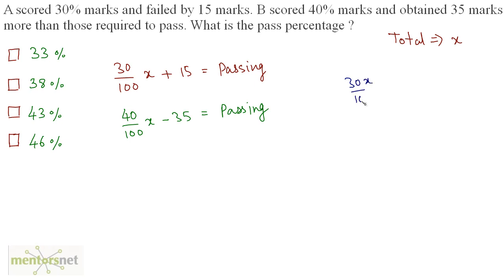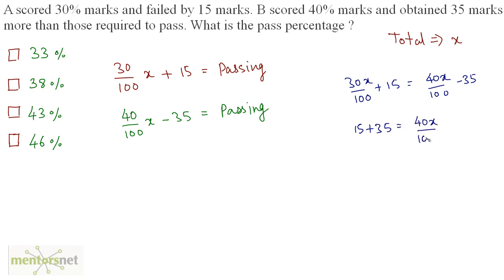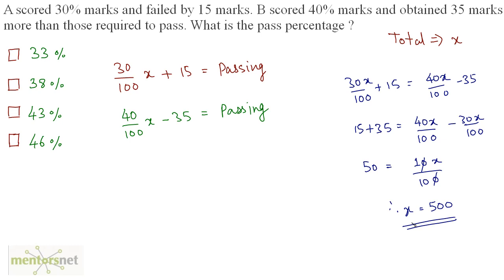So 30x upon 100 plus 15 is equal to 40x upon 100 minus 35. Bring 35 to the left and 30x by 100 to the right: 15 plus 35 is equal to 40x upon 100 minus 30x upon 100. So 50 is equal to 10x upon 100. The zeros cancel out, therefore x is equal to 500.